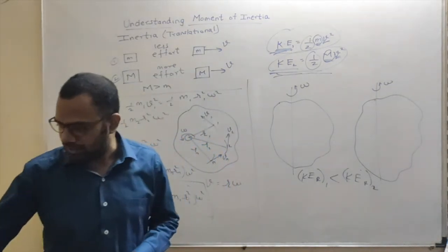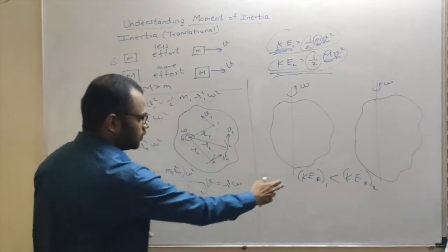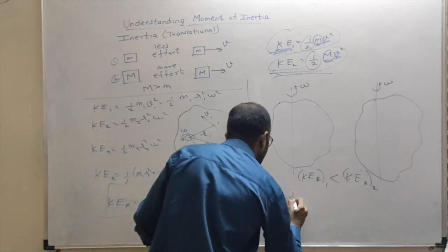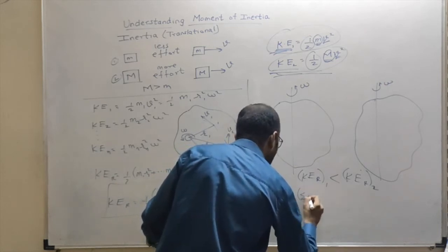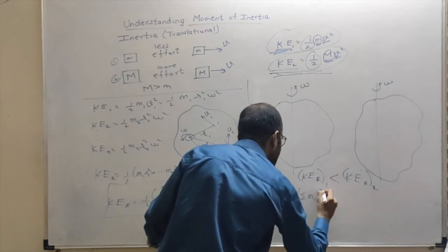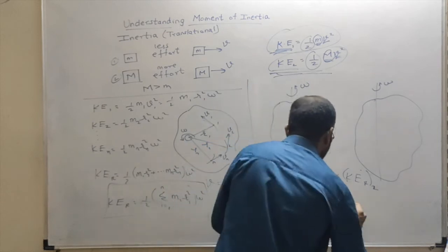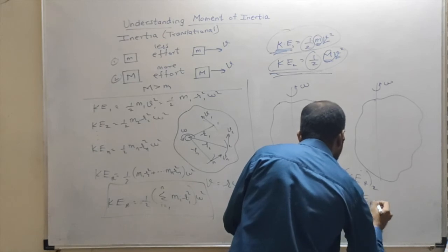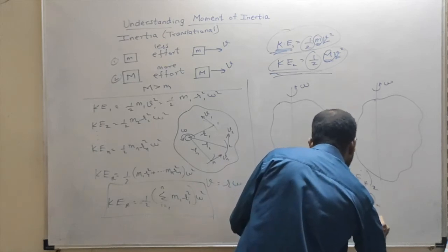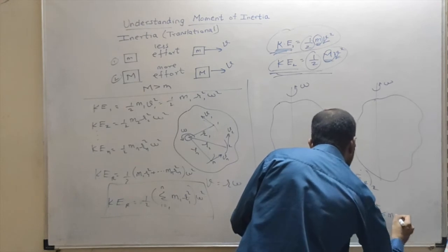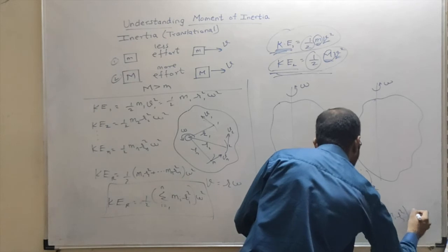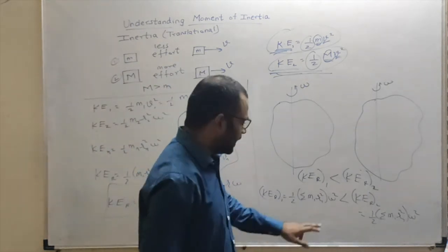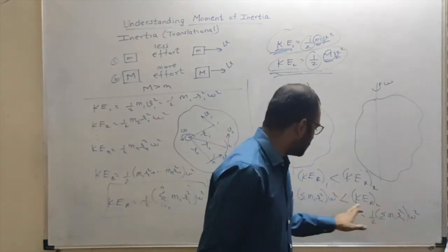So our formula for rotational kinetic energy is half times (summation of mi ri squared) times omega squared. Now putting this formula: the rotational kinetic energy of the first body equals half times (summation of mi ri squared) times omega squared, and this is less than the rotational kinetic energy of the second body, which is also half times (summation of mi ri squared) times omega squared. Since omega is the same for both, what differs is the summation term.